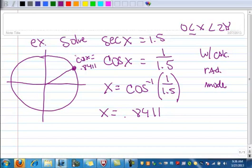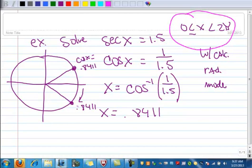Where else is the cosine positive? That's going to be quadrant 4. So this is going to be in the negative direction, 0.8411. But look here, I want my answer to be between 0 and 2π. So obviously the negative doesn't work here. So rather than going in this direction,